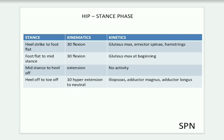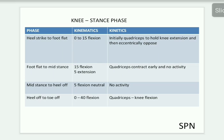In stance phase, for hip kinematics and kinetics: from heel strike to foot flat, there is 30 degrees of flexion; muscles involved are gluteus maximus, erector spinae, and hamstrings. Foot flat to mid stance: 30 degrees of flexion, gluteus maximus active at the beginning. Mid stance to heel off: extension with no muscle activity. Heel off to toe off: 10 degrees of hyperextension to neutral; muscles are iliopsoas, adductor magnus, and adductor longus.